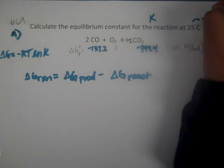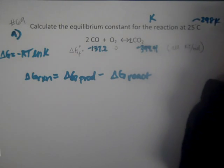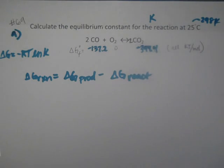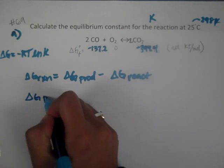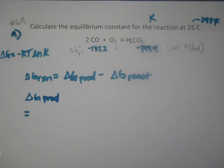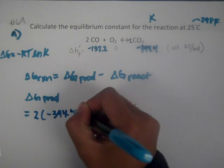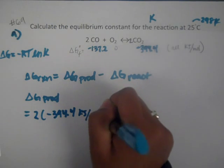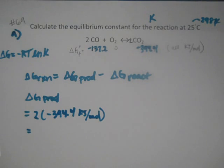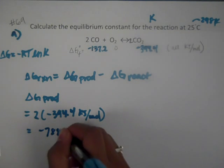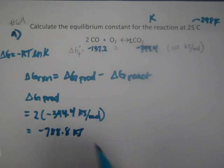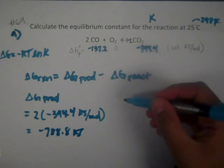I'm going to convert to 298 Kelvin already so I don't mix up Kelvin K and equilibrium K. Delta G of products is the sum of all the product molecules. It is an extensive property, so we have to account for the 2 moles of CO2: 2 times negative 394.4 kilojoules per mole gives us negative 788.8 kilojoules.